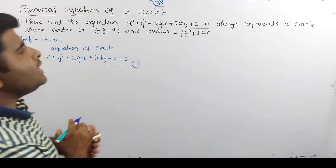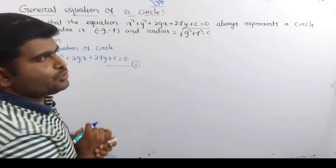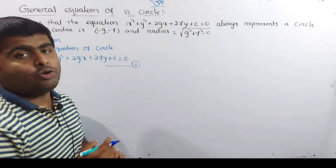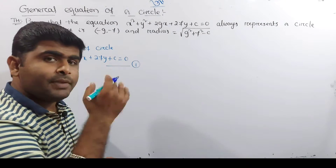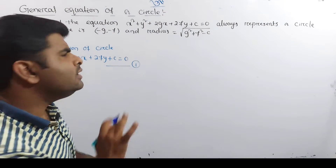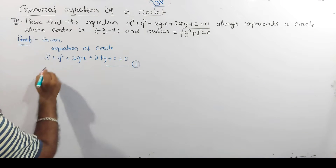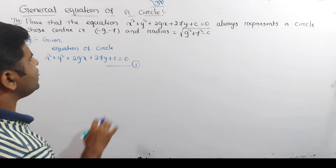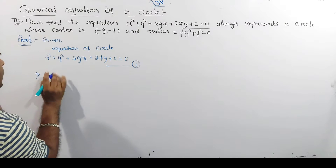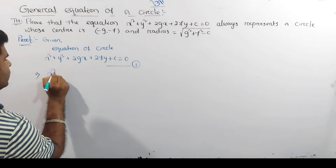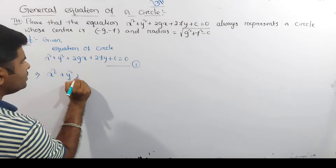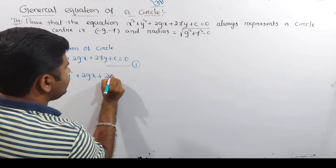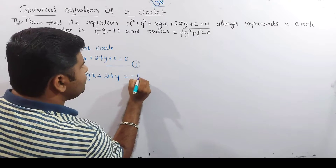Now we have to solve the problem here. We have to compare the main statement to the equation of the circle. So, x squared plus y squared plus 2gx plus 2fy equal to minus c.